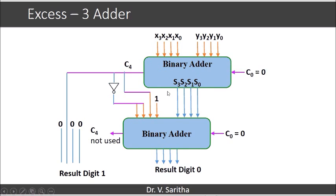Two binary parallel adders will be used for this. So in this case, if you see, X and Y are 2 XS3 numbers where we are going to perform addition. So S3, S2, S1, S0 are the result of XS3 addition.